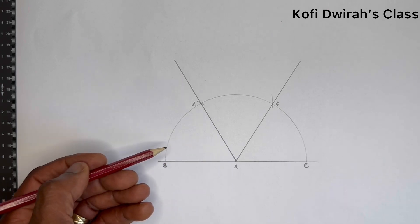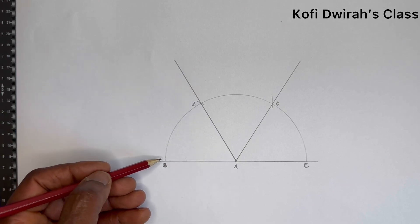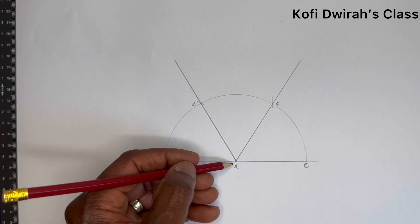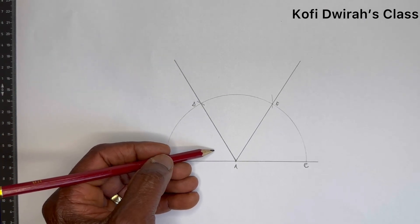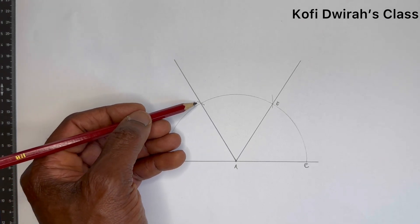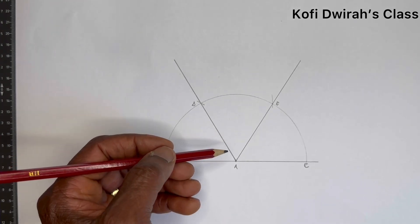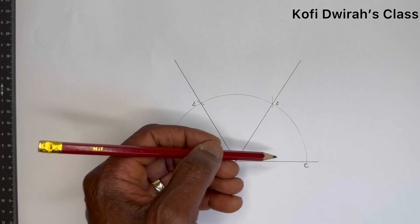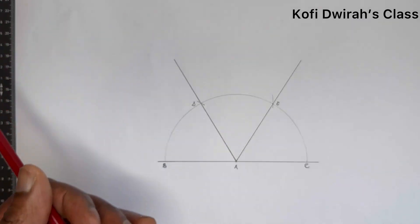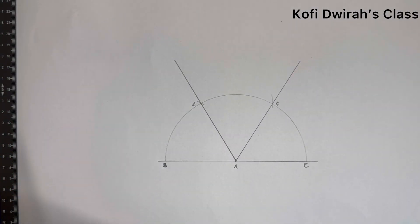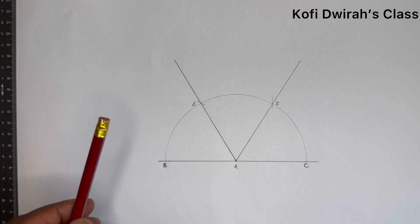The angle here is 60 degrees — that is angle BAD is 60 degrees. The angle DAE is also 60 degrees. Then angle EAC is also 60 degrees. So this is how to trisect a 180-degree angle — dividing 180 degrees into three equal parts of 60 degrees each using your compass.